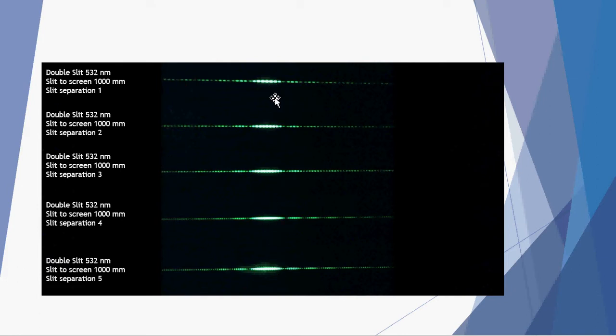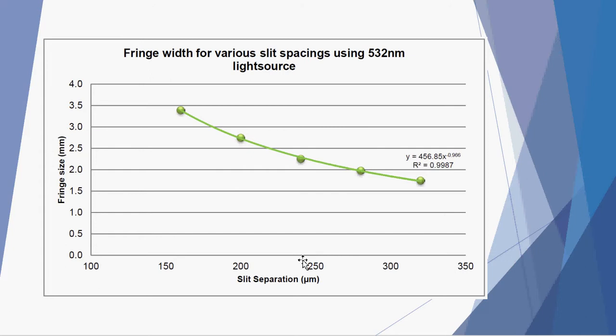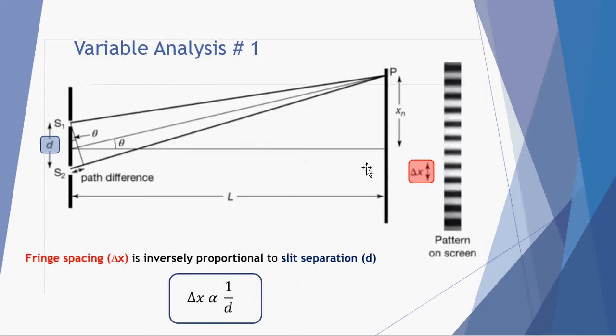Now there's not an obvious difference in the spreading of those particular patterns but when we graph them what we find is as we increase our slit separation the fringe sizes or the width between each successive fringe drops down or is reduced. So we have here an inverse relationship. So we can say that the fringe spacing, delta x, is inversely proportional to the slit separation. Meaning if we increase the slit separation we compress our interference pattern and we have a smaller delta x.